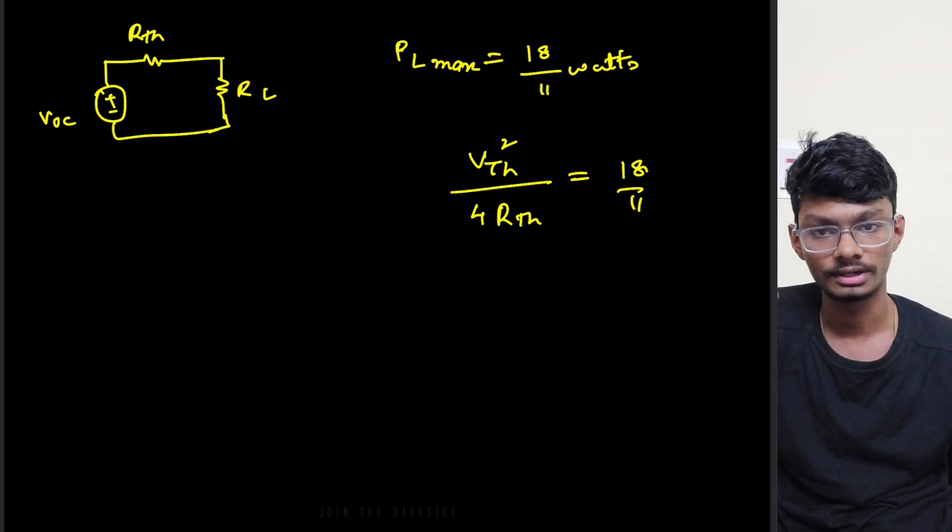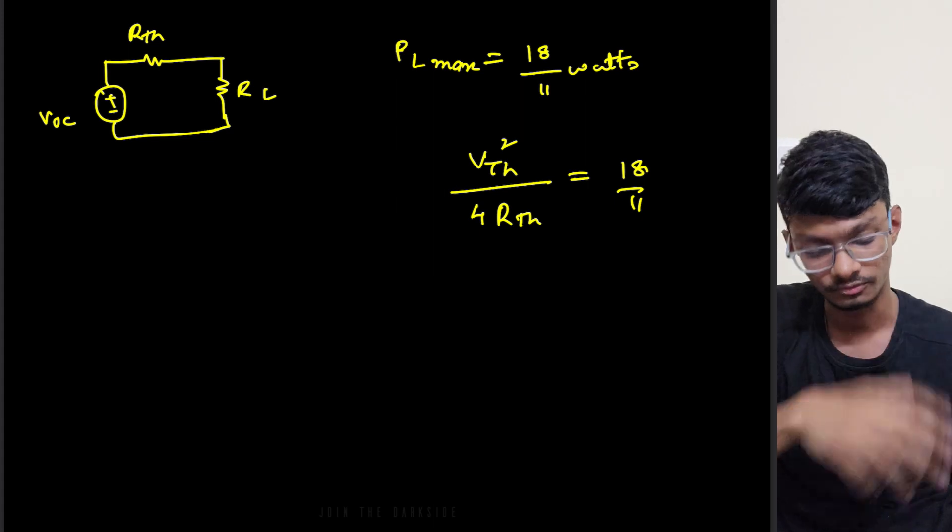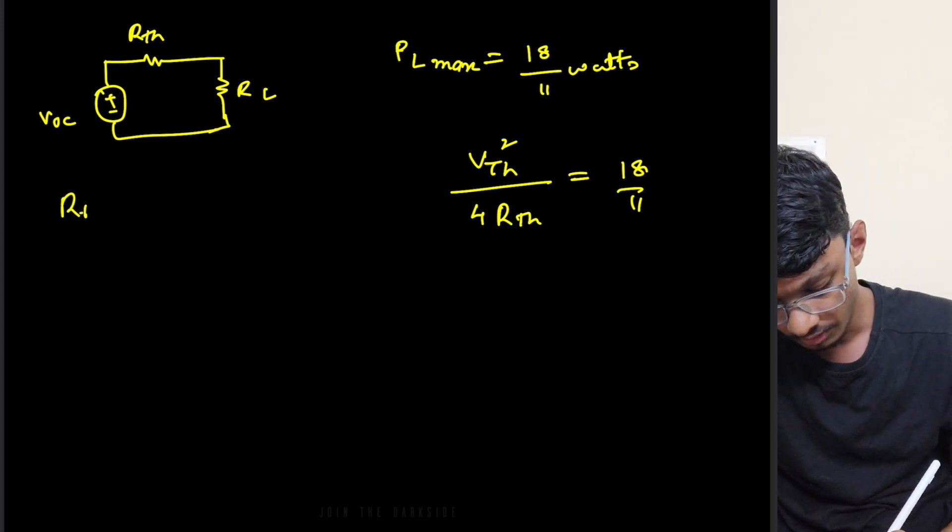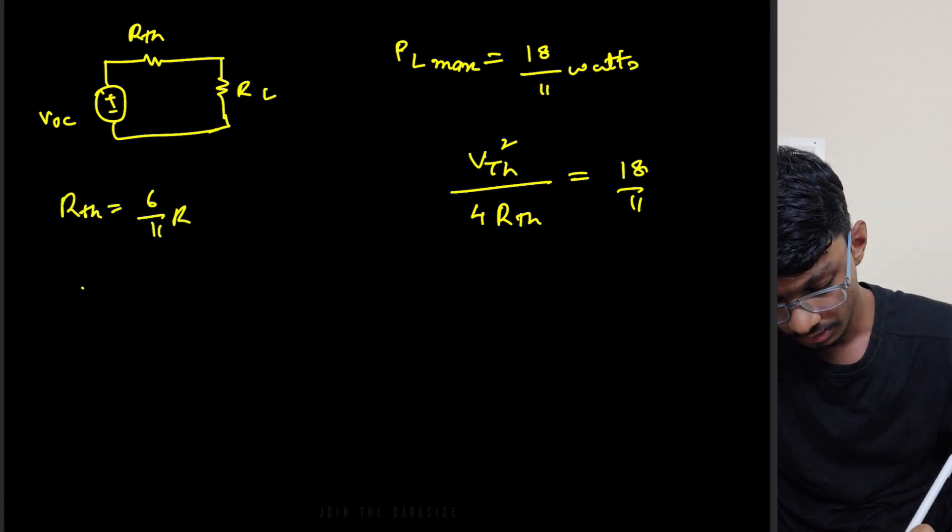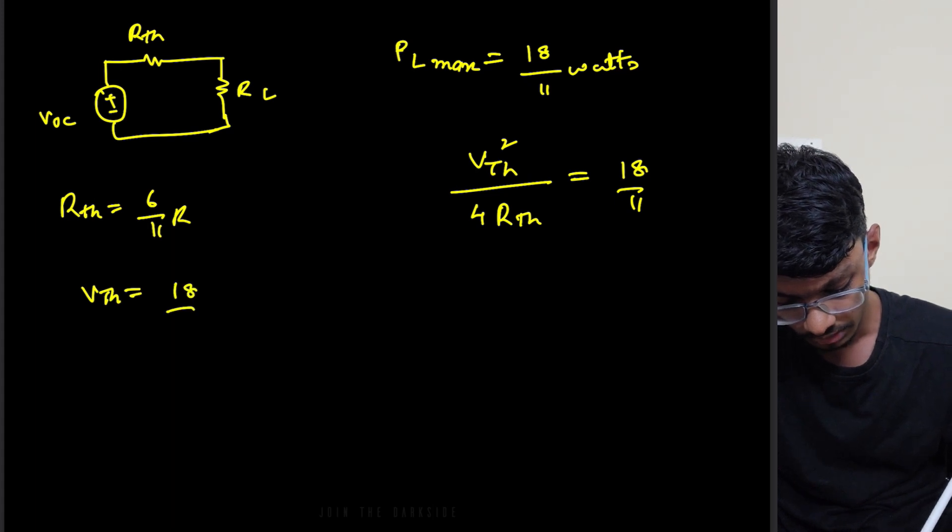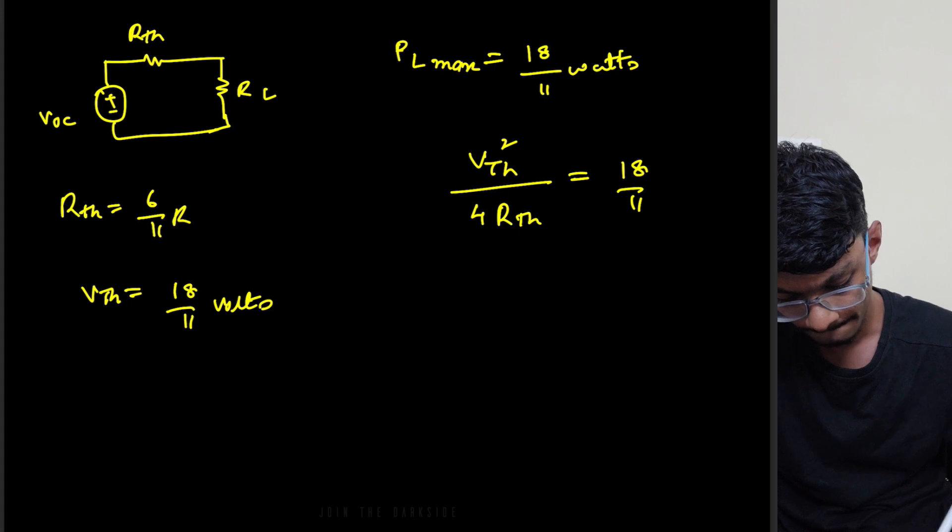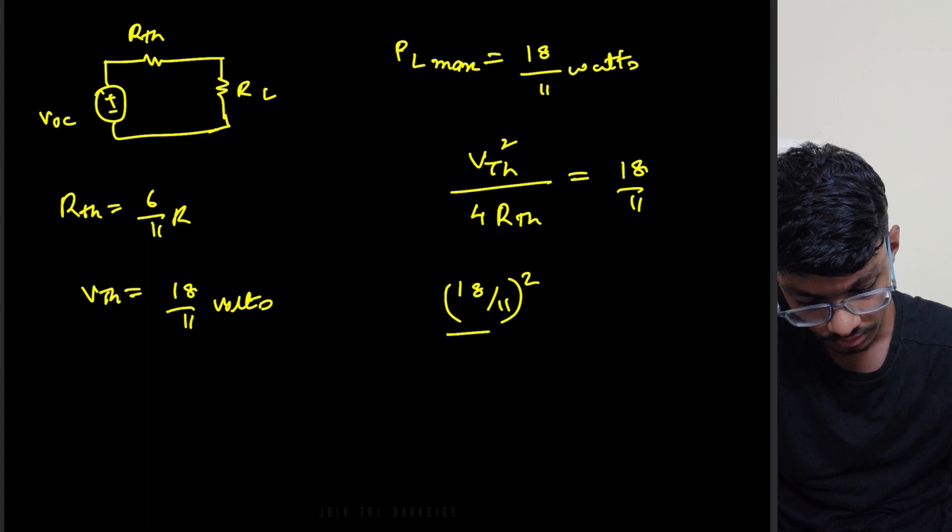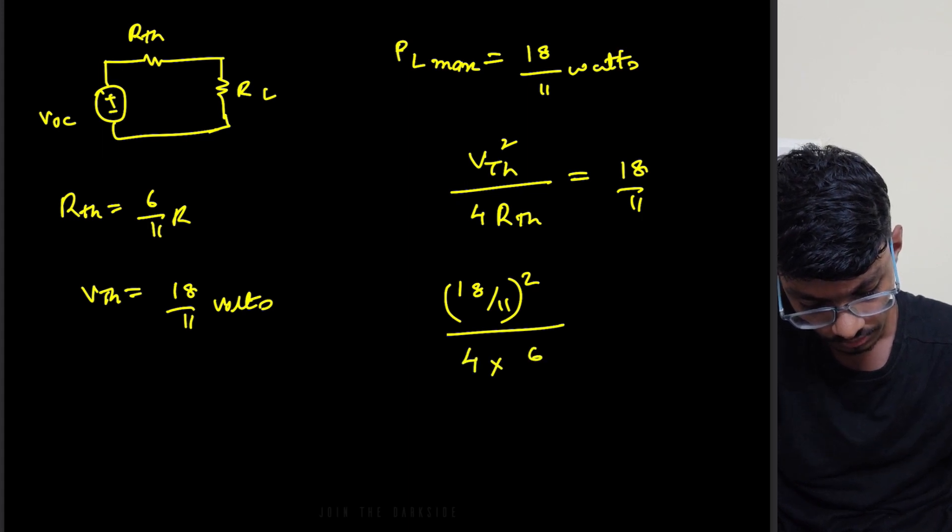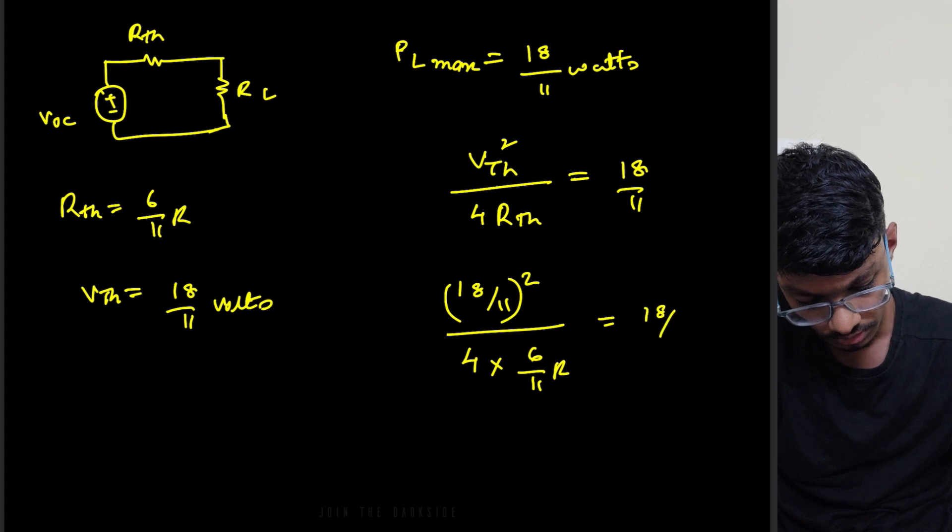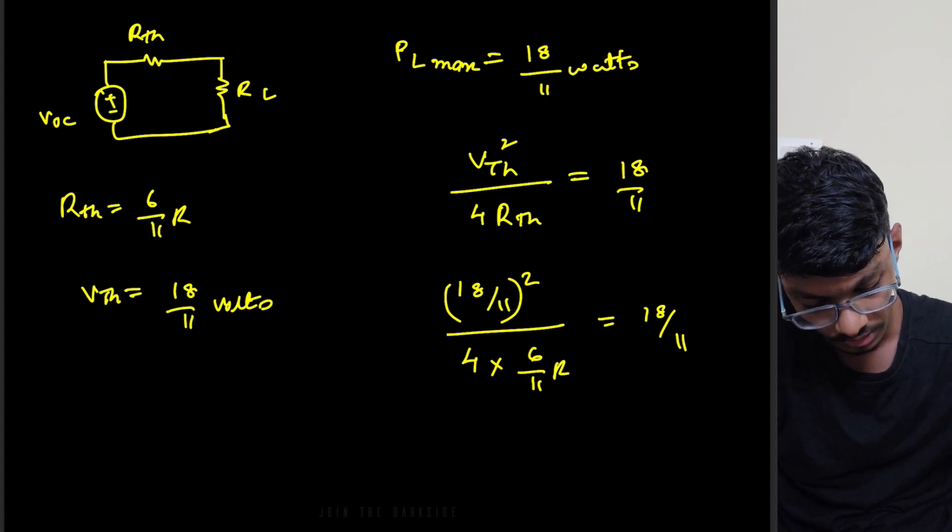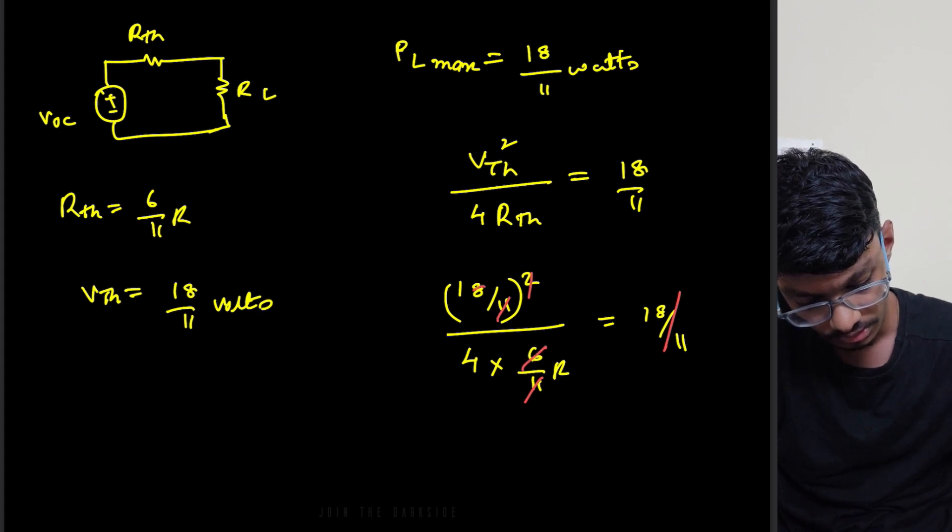If you write that Rth equals to RL then you will get this form. Now what is Rth in our case? Rth in our case was 6 by 11 R. So (18 by 11) whole square divided by 4 times 6 by 11 R equals to 18 by 11. So this 18 by 11 cancel each other out, this 11 and this 11 also cancel, this 6 and this 3. So we're left with basically R equals to 3 ohms. So this is the answer.